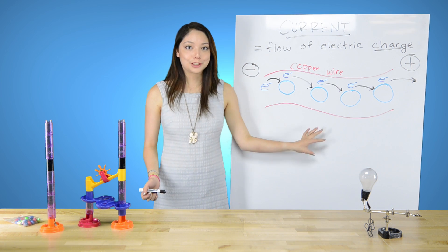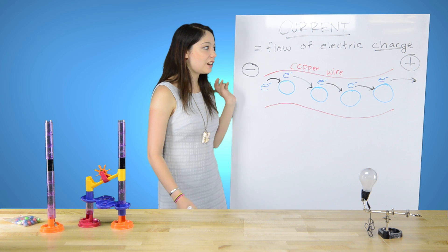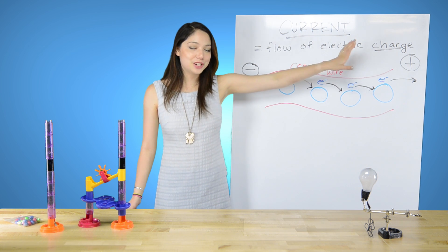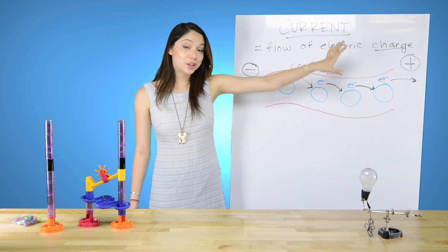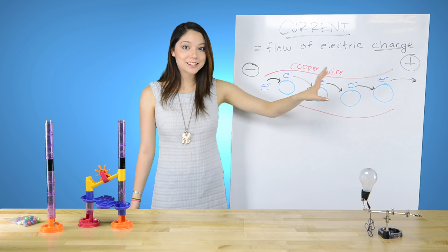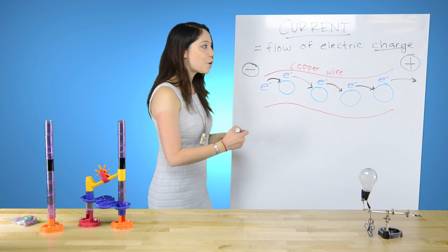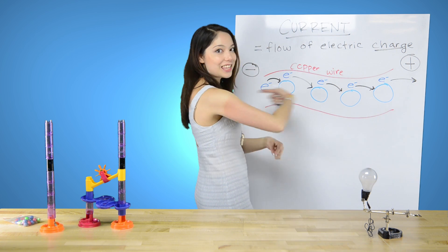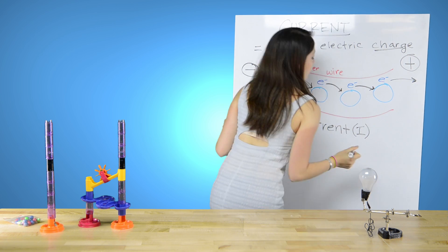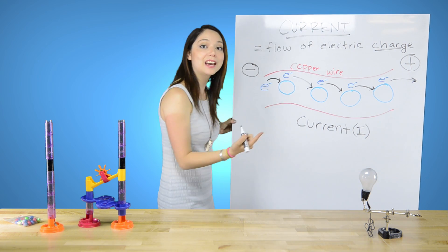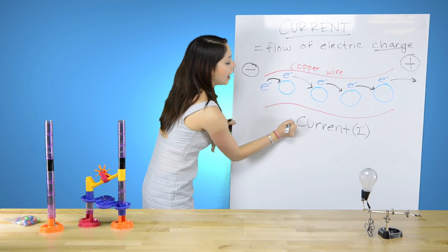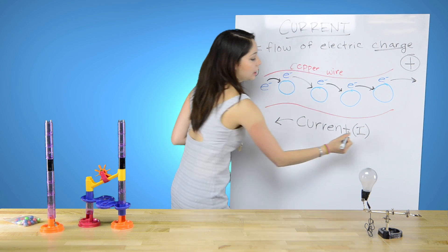So here's where it gets really confusing. This is the negative end, and this is the positive end. And you may have heard me say the current flows from positive to negative. So current is actually going this way. So this is your current, or I, as it's always denoted electrically, and it's flowing this way.